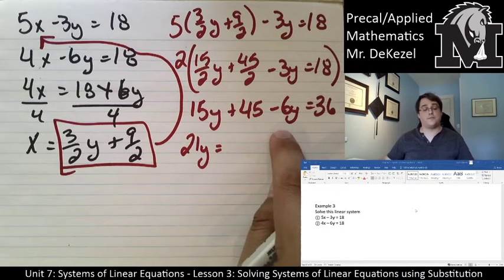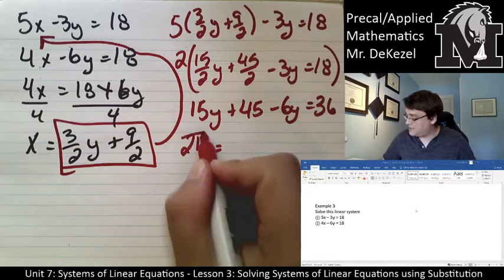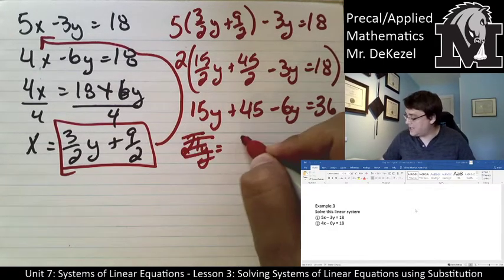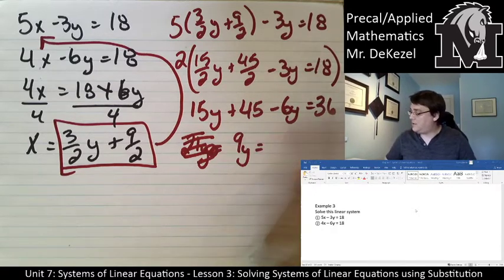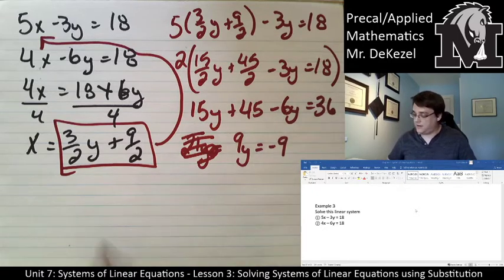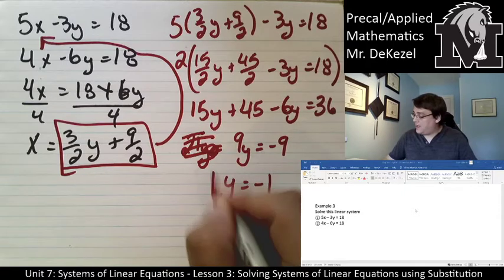So this is actually 9y equals, we subtract 45 from both sides, that equals negative 9 over here. Y then equals negative 1.